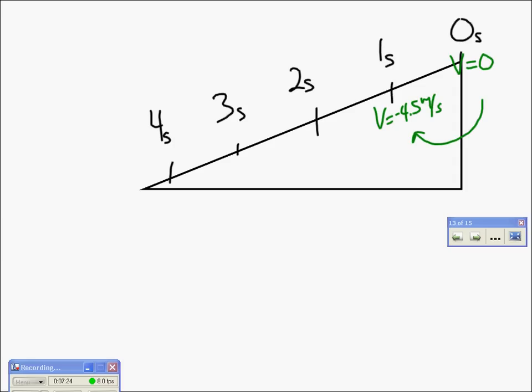So when we go from here to here we have now negative 9 meters per second, that's how fast it's going at 2 seconds, and we go on down to the 3 second mark we are going 13.5 meters per second.